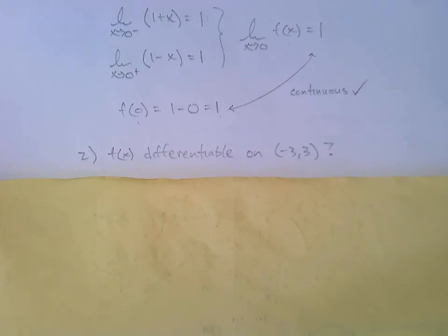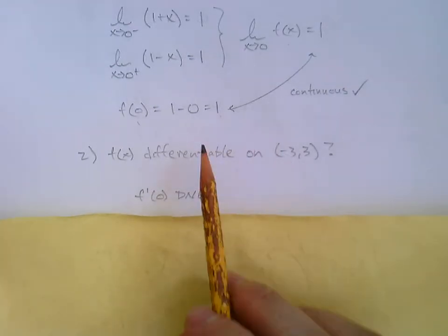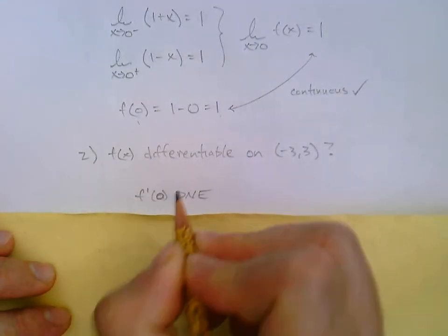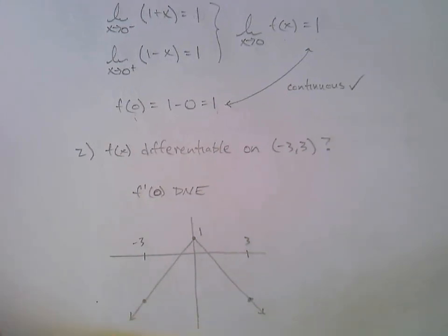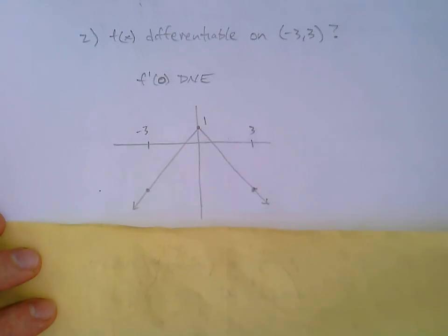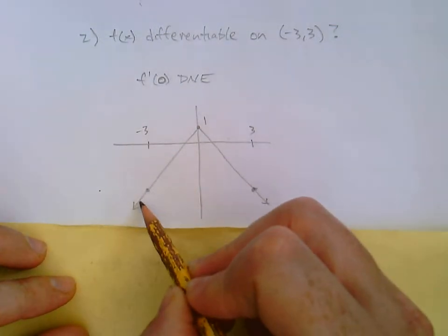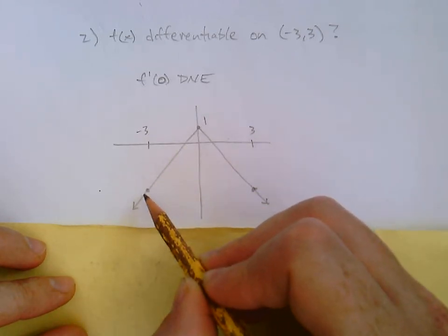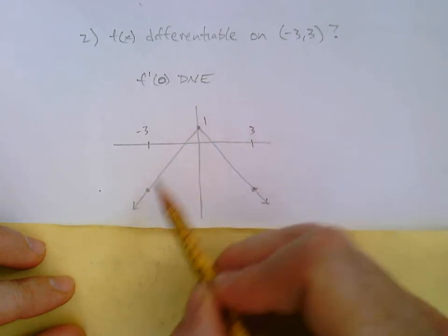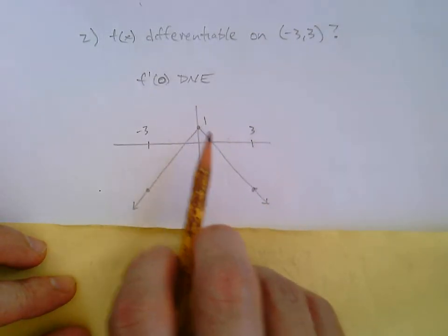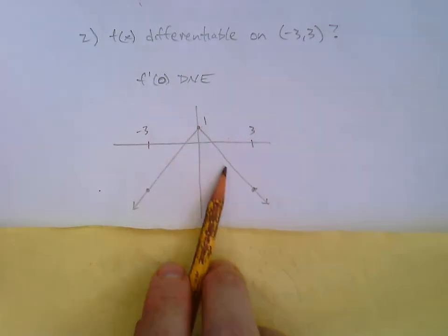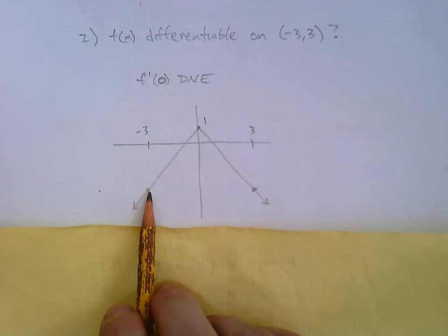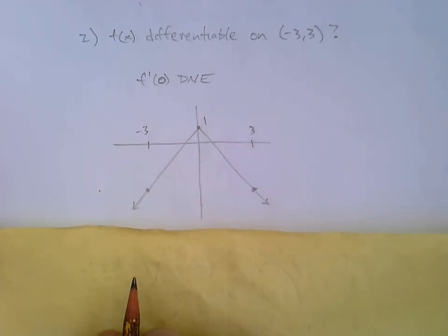Okay, so it turns out the answer to this is no. That f'(0), even though it's continuous there, that questionable moment at 0, the derivative does not exist. The best way to explain this is with a graph. If you were to graph that piecewise function, you would get this. So there's this line here. It's 1 + x this way. So it's got a y-intercept of 1 and a slope of 1 coming up. Then it turns into 1 - x, or maybe you want to think of it as -x + 1. So it's got that y-intercept of 1, but now the slope is -1. And I've indicated where -3 and positive 3 occur, just because that's the interval we're looking at.